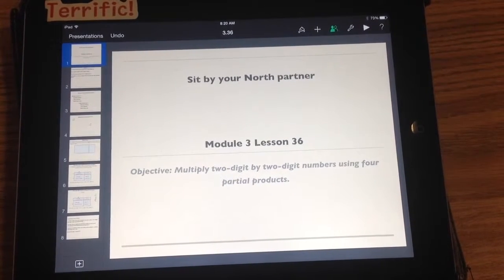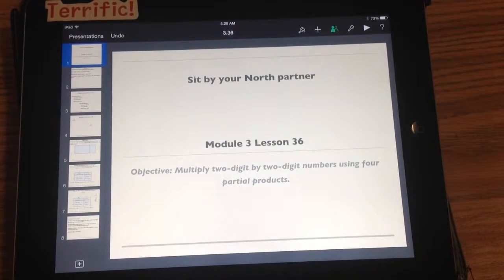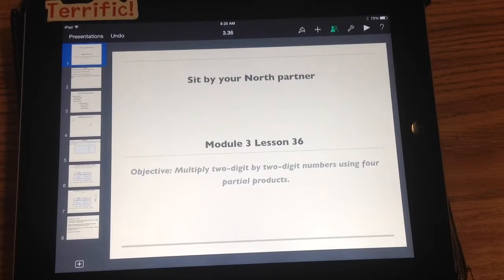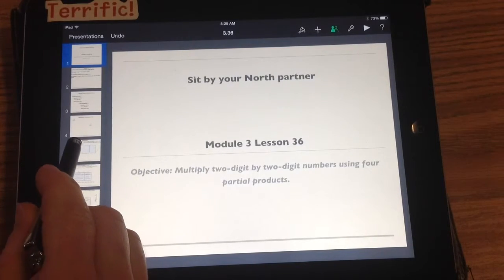Alright boys and girls, lesson 36. We are two away from the end of the module. You'll notice we are multiplying two digit by two digit numbers using four partial products. Let's go ahead and get started.